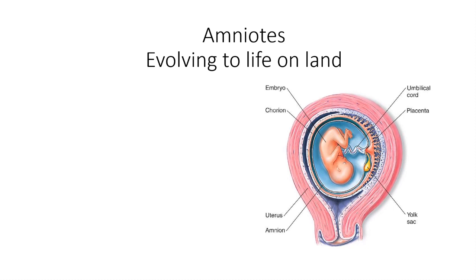Then you have the amnion. If you've ever heard of somebody's water breaking, this is the amniotic sac. The amniotic sac is incredibly important because it's a membrane that keeps the growing embryo in a watery environment. That makes sense because amniotes do not have to return to water to reproduce — everything else does. Amphibians — there are some exceptions with direct-developing amphibians — but fish and amphibians all return to water. Amniotes do not, because they've got this amniotic sac that encloses the embryo in a watery environment.